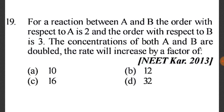Question 19: For a reaction between A and B, the order with respect to A is 2 and with respect to B is 3. The concentration of both A and B are doubled. The rate increase factor will be: 2² = 4 for A and 2³ = 8 for B.